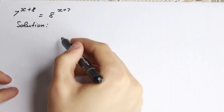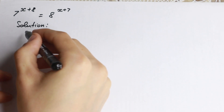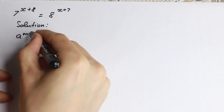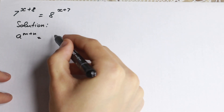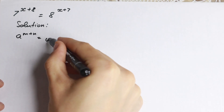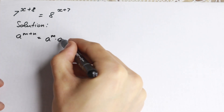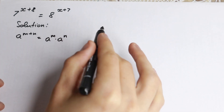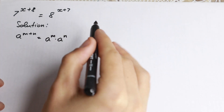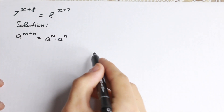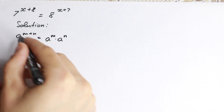First of all, we need to know a really good rule. If we have a to the power m plus n, we can write it as a to the power m times a to the power n. We have this rule on the right hand side and on the left hand side, so let's use it.